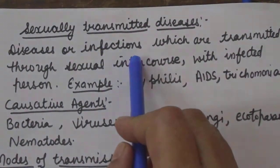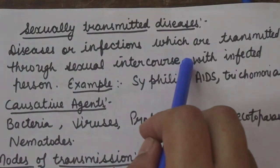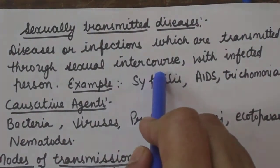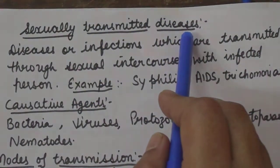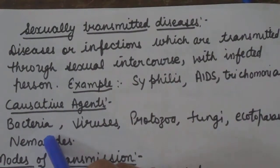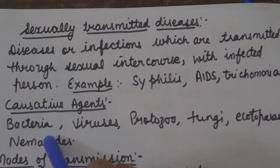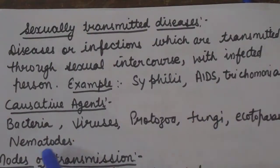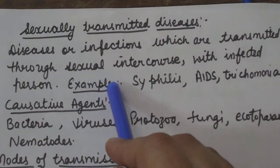Diseases or infections which are transmitted through sexual intercourse with an infected person are collectively called sexually transmitted diseases. For example, syphilis, AIDS, trichomoniasis, and HIV leading to AIDS. Gonorrhea and syphilis are bacterial diseases. Many diseases are caused by bacteria, viruses, protozoa, fungi, ectoparasites, and nematodes — all are known as sexually transmitted diseases.